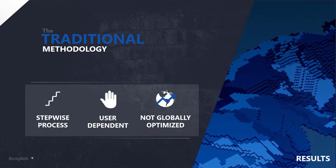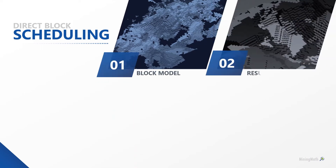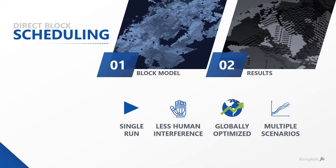Even if all steps are well executed by an experienced professional, it's not an overall optimized process. Through the one-step optimization approach, the planner optimizes with a more global view, more likely to find higher NPV, leading to results that better comply with reality. This new approach, based on mixed integer linear programming and heuristics, is able to respect the same constraints required in the traditional methodology, and its flexibility allows the planner to generate multiple scenarios to identify more robust and value-added solutions.